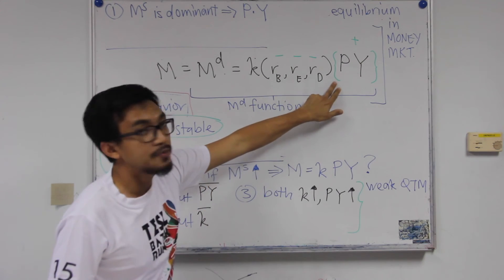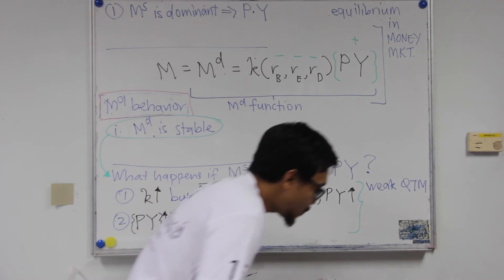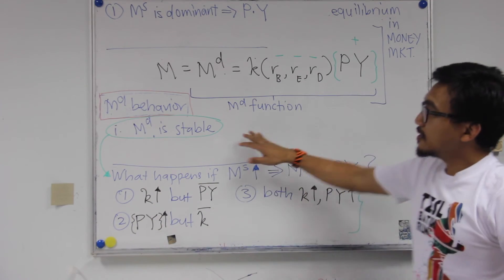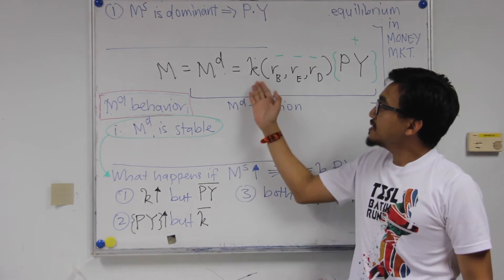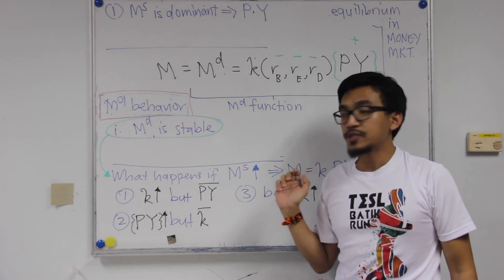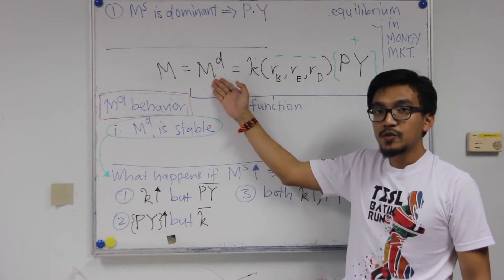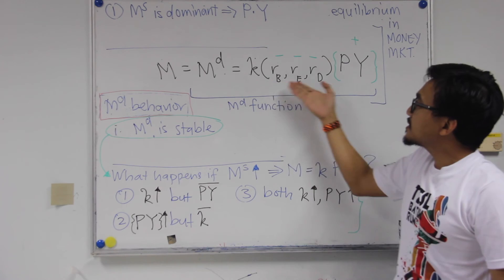So basically all these three, the return or the interest rate, the expected return on these three assets will negatively affect money demand. And then we have the usual nominal income here, PY. So we're going to look here according to the monetarists, how does the money demand equation behave. They believe that the money demand equation is stable. This is stable. This will not change a lot basically, the demand for money.